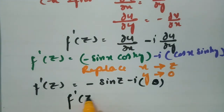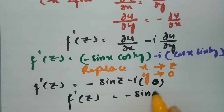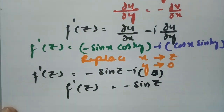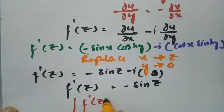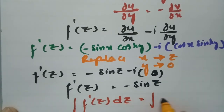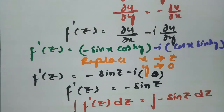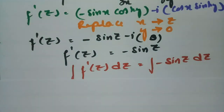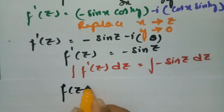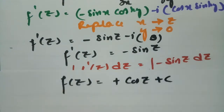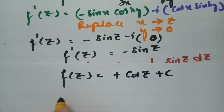Taking the integration on both sides: ∫f'(z) dz = ∫-sin(z) dz. The integral of -sin(z) is -(-cos(z)) = cos(z). Therefore, f(z) = cos(z) + c. So f(z) = cos(z), which is the analytic function.